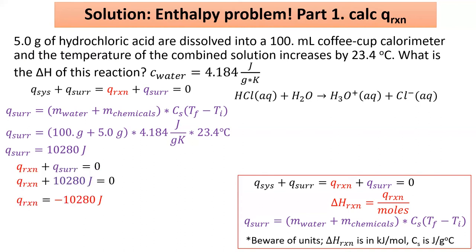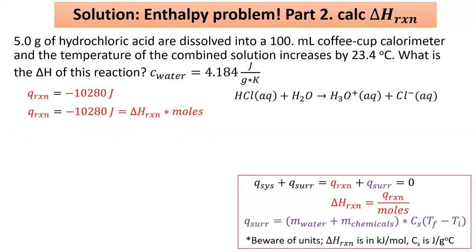I'll plug that into the top equation and solve for Q reaction, which will be exactly opposite to Q surroundings. We're almost there. The number we have is the energy when five grams of HCl reacts. But the delta H of a reaction is the energy when one mole of HCl reacts.